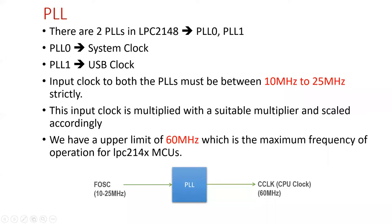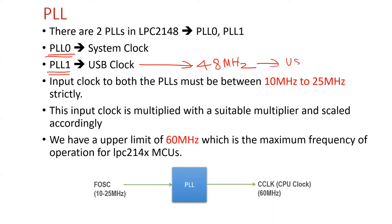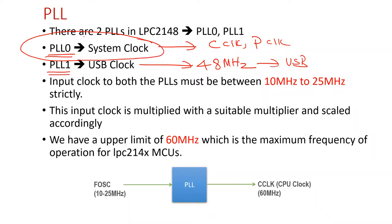LPC-2148 actually has two PLLs: PLL0 and PLL1. PLL1 is used for generating the clock for USB at a fixed frequency of 48 MHz — it is exclusively dedicated to the USB circuit. PLL0 is used for generating the system clock, which is the CPU clock, from which we also generate the peripheral P-clock. What we are going to discuss today is PLL0, which supplies the necessary clock for both CPU and peripherals.